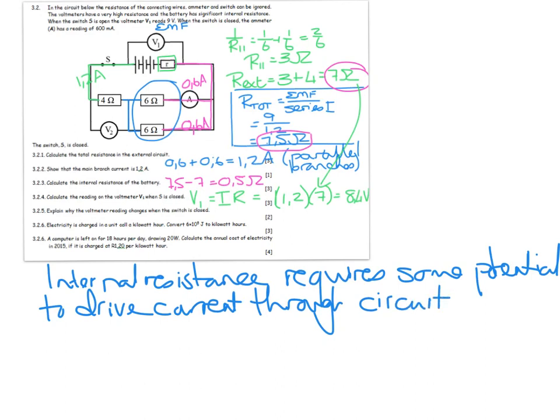Electricity is charged out in a unit called kilowatt hours. Convert those joules into kilowatt hours. There are a few different ways you could do that. A kilowatt hour is different from a watt second. A joule is a watt second, which is 6 times 10 to the power of 5 watts multiplied by 1 second. How do I change that into kilowatts? I divide through by 1,000.